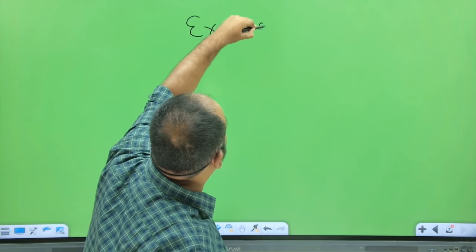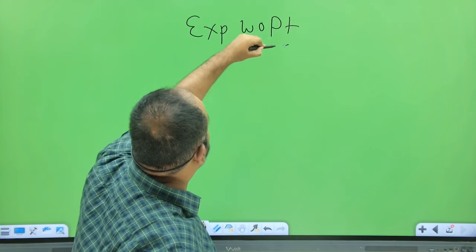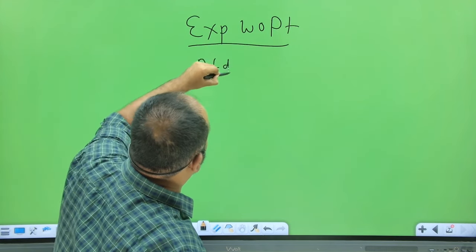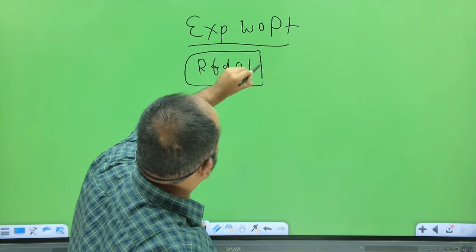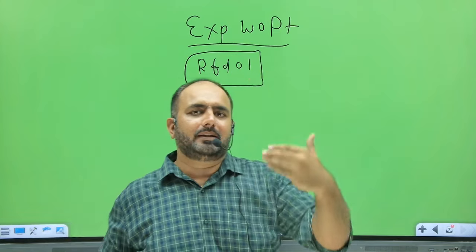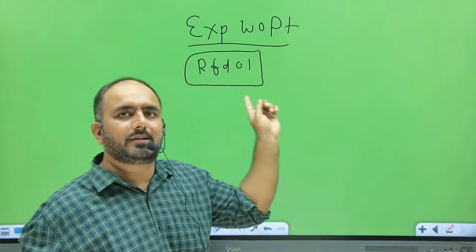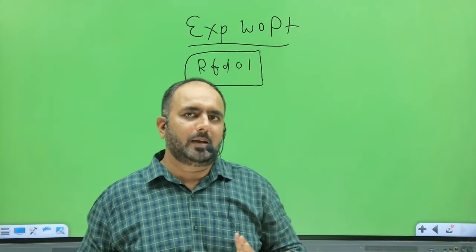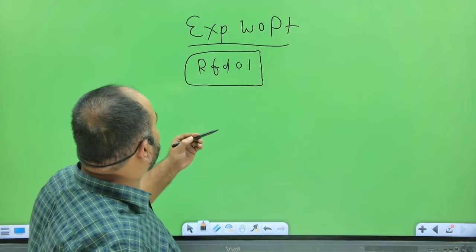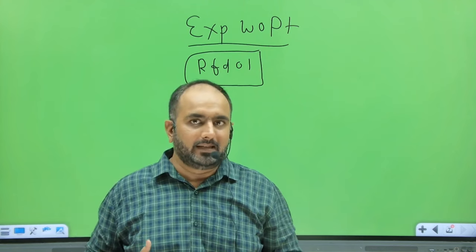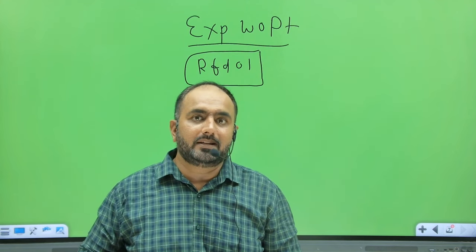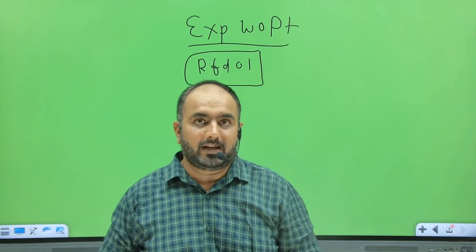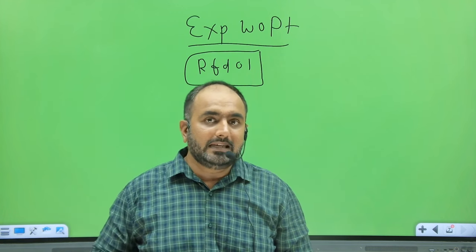So how do we claim refund in export without payment of tax? You need to file an application on the GST portal — RFD-01. As I mentioned at the start, there are 12 types of refunds, and one of them is supplies made under LUT without payment of tax. Along with the RFD-01 application, you need to submit approximately 10 documents: Annexure B, GSTR 2A, GSTR 2B, declaration, undertaking, EGM status, shipping bills, EBRCs, etc.